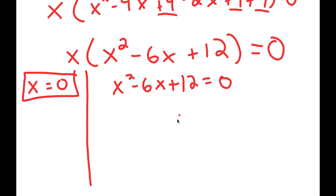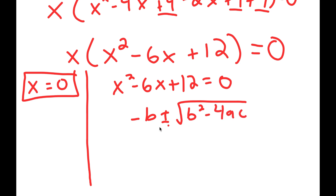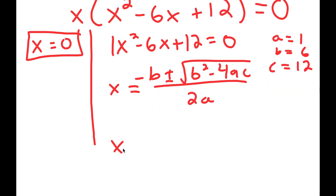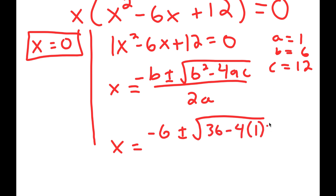The quadratic formula is negative b plus or minus the square root of b squared minus 4ac, all over 2a. In this case, a is 1, b is 6, and c is 12. Plugging these values into the quadratic formula, I get negative 6 plus or minus the square root of 6 squared, which is 36, minus 4 times 1 times 12, all over 2 times 1.